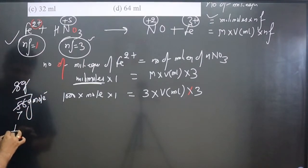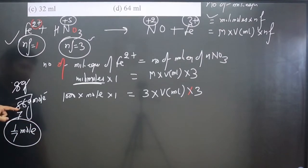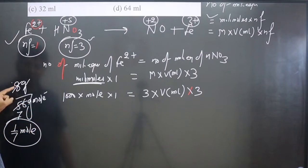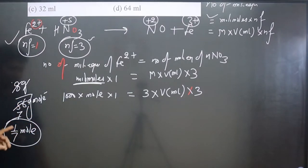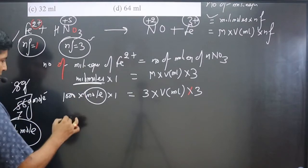We are getting 1 upon 7 mol. This is what we get. Mass divided by atomic mass, because single element is there, that is why mass divided by atomic mass equals 1 by 7. So in place of mol, I can write 1 upon 7.